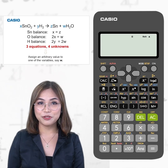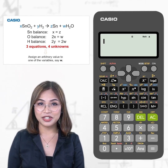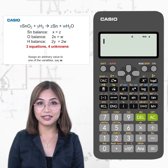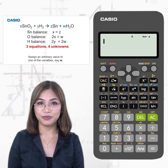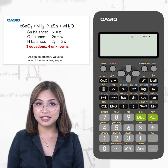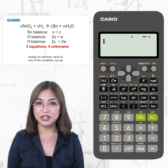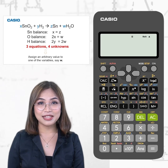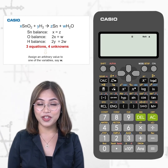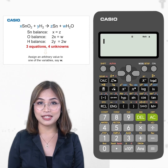The first step is to represent the unknown coefficients as letters x, y, z, and w. Next, we set up atomic balance equations. The number of atoms serve as the multipliers for the variables. The arrow sign separates the left and right side of the equation and can be thought of as the equal sign.